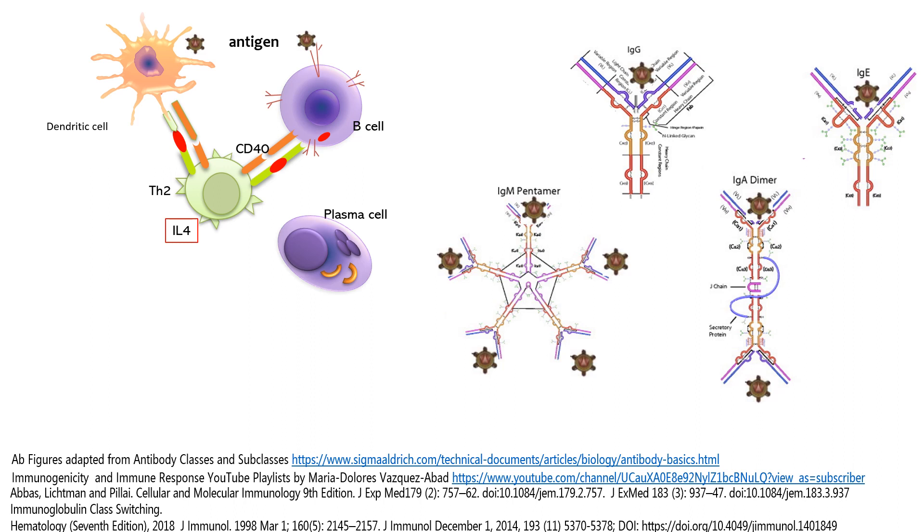Now the different isotypes or classes are in the constant region of the antibodies, and that switch, that change from IgM all the way to IgE, is also driven by that original presentation of the B cell to the TH cell.